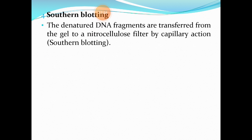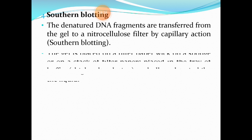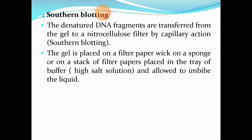Soaking in Tris buffer neutralizes the gel. That completes the third step of electrophoresis and denaturation. Then you proceed to Southern blotting: the denatured DNA fragments are transferred from the gel to a nitrocellulose filter by capillary action — that is called Southern blotting. The gel is placed on a filter paper wick on a sponge or stack of filter papers.